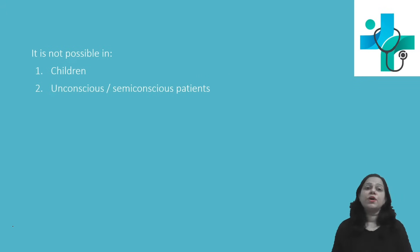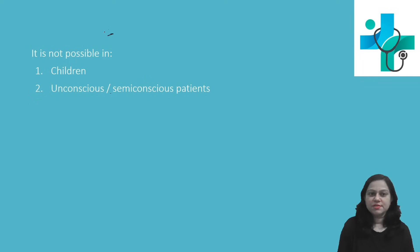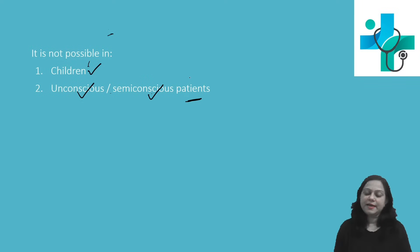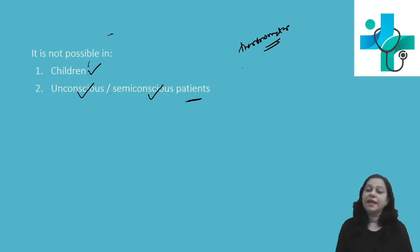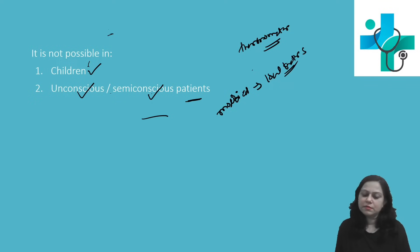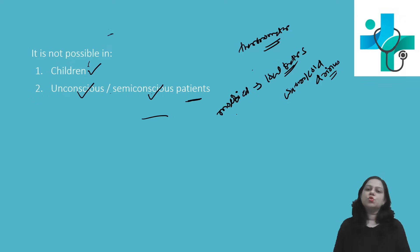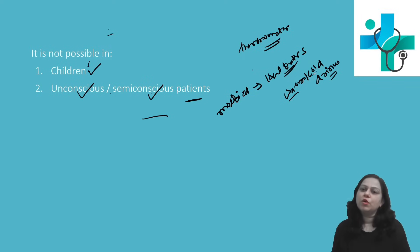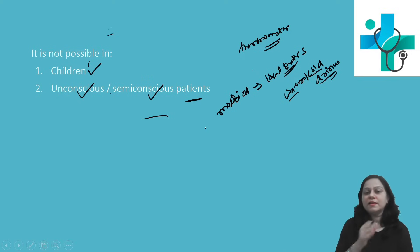In which patients should you not measure body temperature by the oral site? That is in children and in unconscious or semi-conscious patients, because there is a possibility that they break the thermometer and mercury will spill, so it is avoided. It can also be modified by local factors like warm or cold drinks — if a person has just taken a warm or cold drink, you will find a little alteration in the reading.